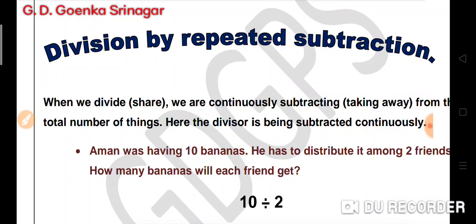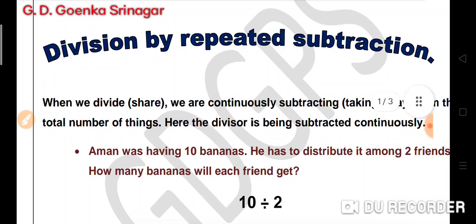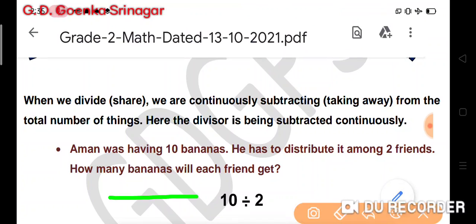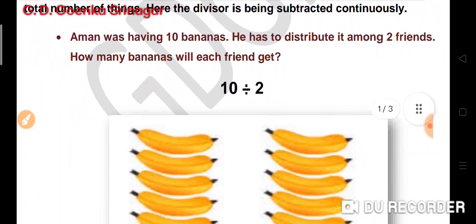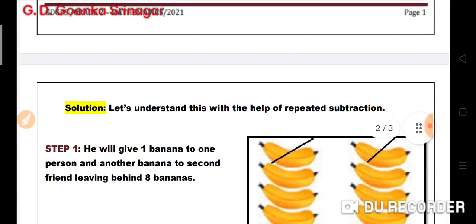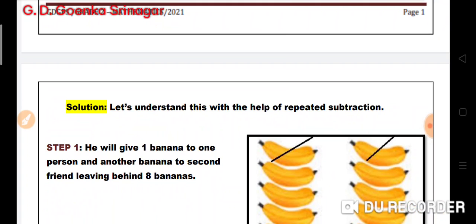Let us have a look at the example. Amman was having 10 bananas. He has to distribute it among 2 friends. How many bananas will each friend get? So the division sentence is 10 divided by 2, and we will solve this division by repeated subtraction.